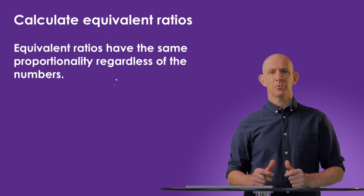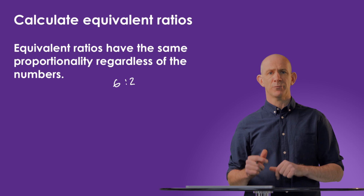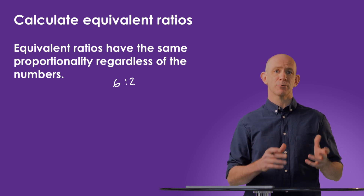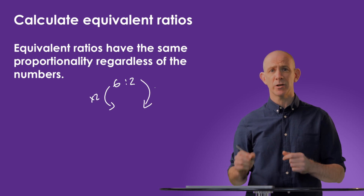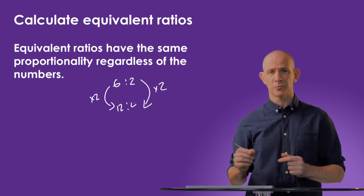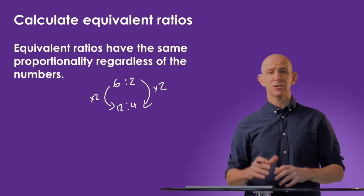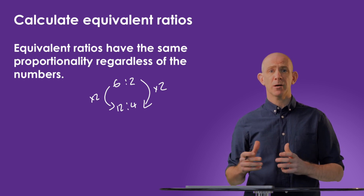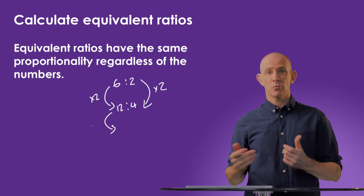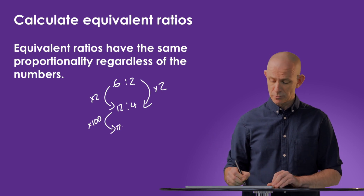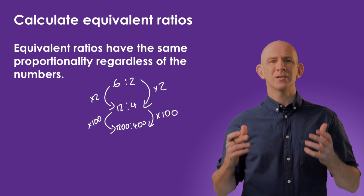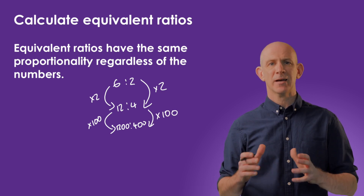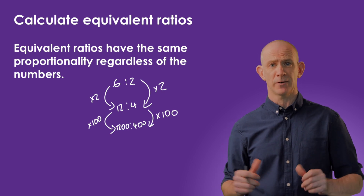If we take this example of a ratio of 6 to 2, we can see that the proportion difference is that the first group of shares is 3 times the size of the second group of shares. If we multiply both sides by 2, we can create an equivalent ratio of 12 to 4. The proportionality still remains the same. If we then multiply both sides by 100, for instance, we have a ratio of 1200 to 400. Obviously, we can continue to increase these numbers, but reversing this effect is a really useful tool called simplifying.